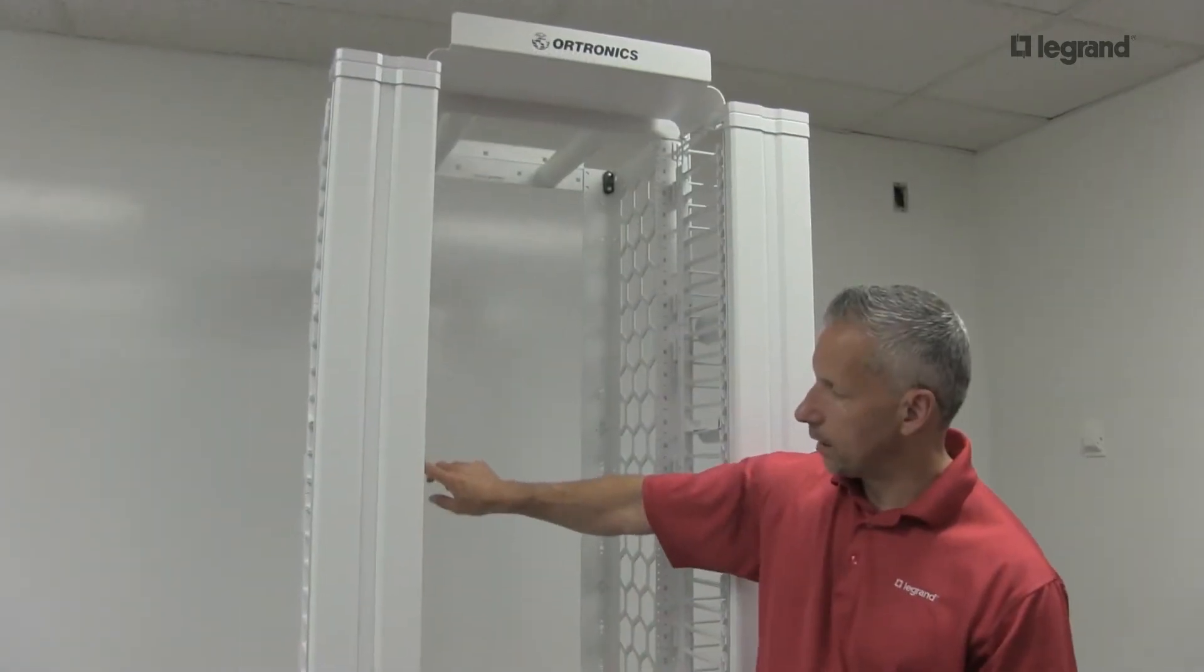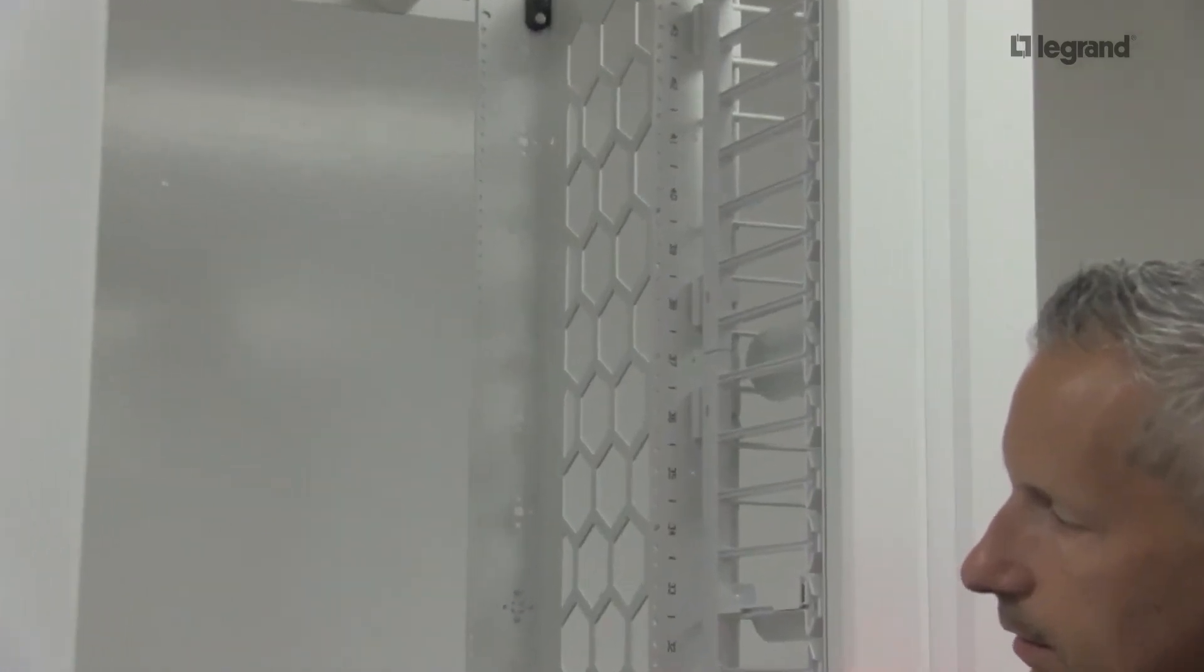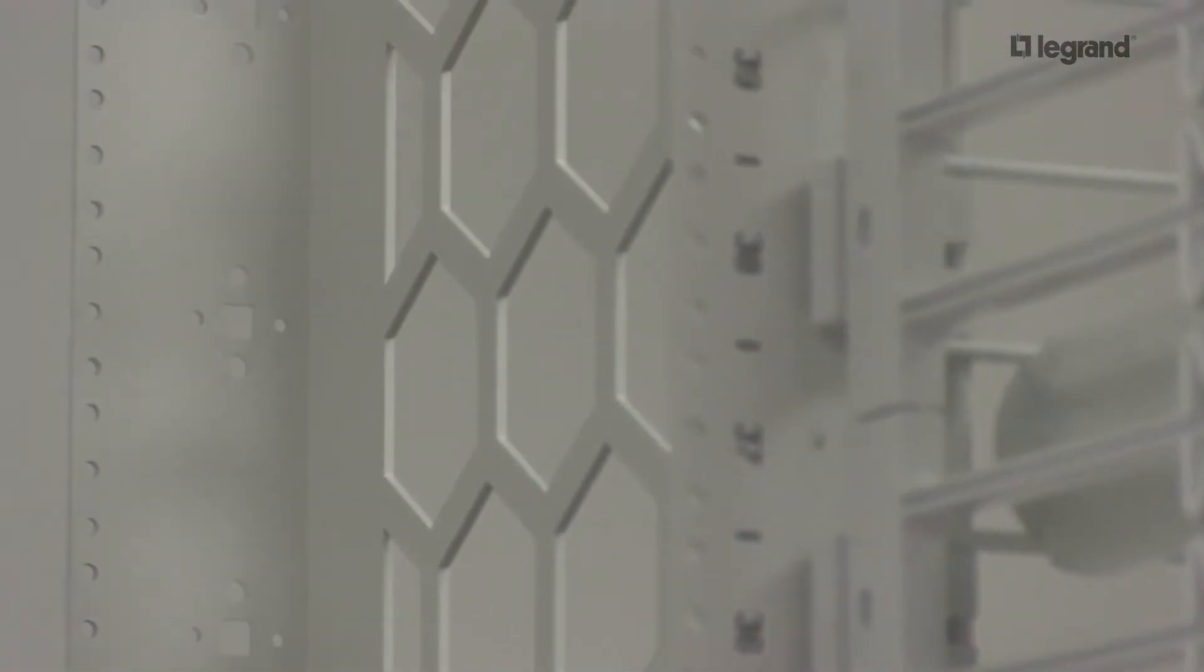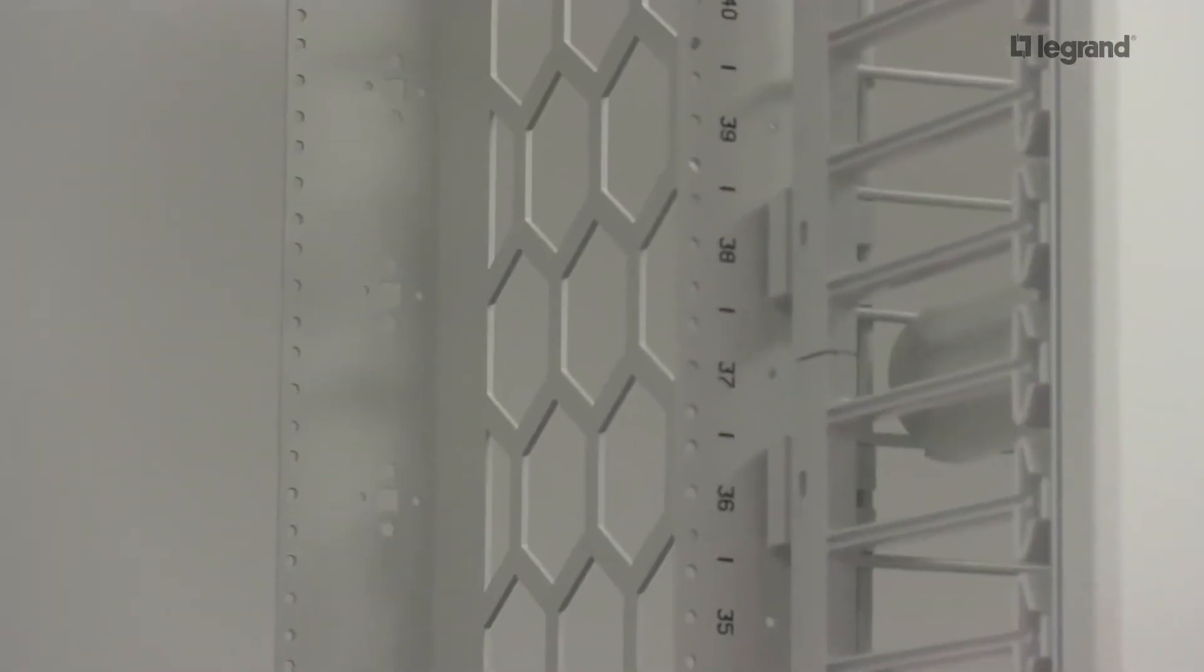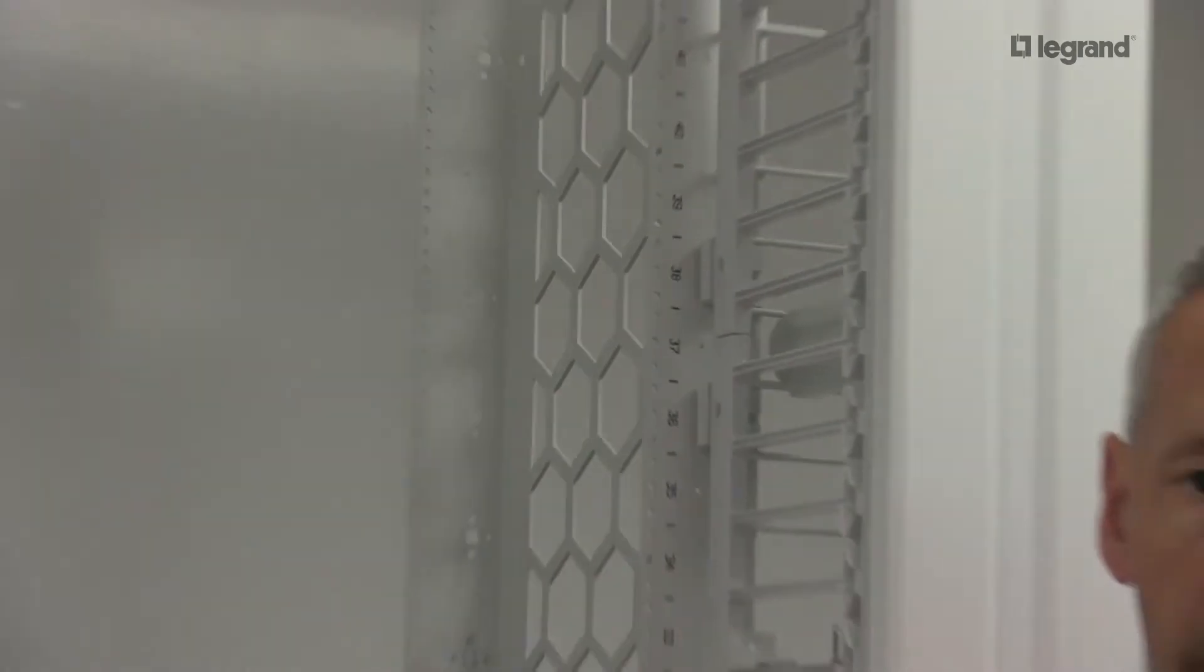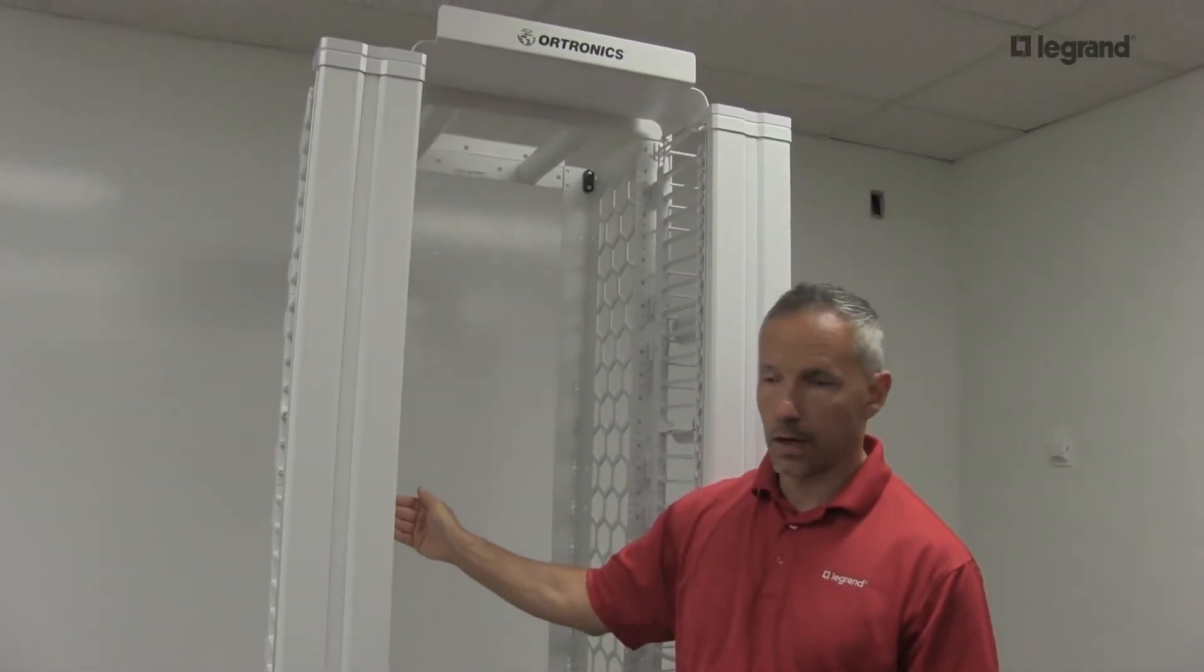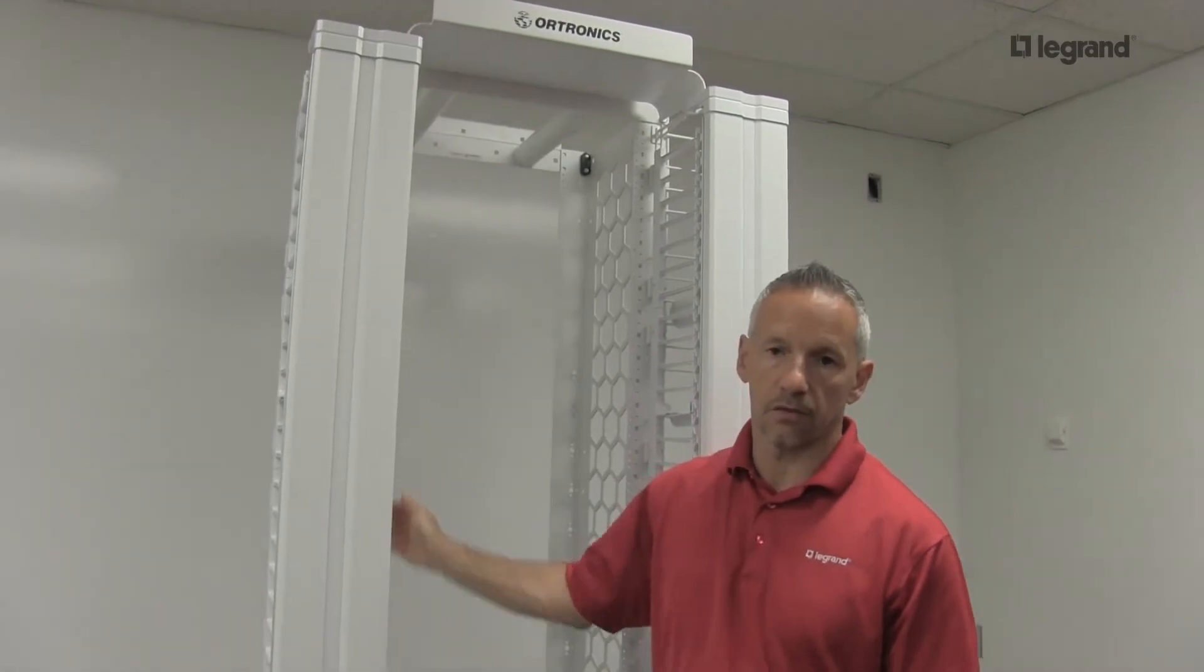Mighty Mode 20 has RU location markings both front and rear with tick marks for each RU location. On the deeper versions, the 24-inch and 30-inch, it's marked on the inside. So if someone is installing equipment, a slide, or a tray in the front, you'll be able to see both the front and back marking from the front side.